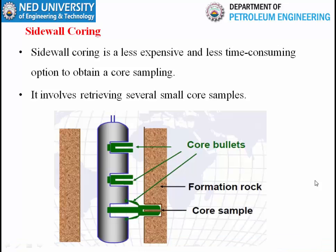Assalamualaikum, this is Fayzan Ali and this is my second recorded lecture for week number 10. In this week we will discuss coring and NMR log. First we will discuss coring. There are two types of coring: one is called conventional coring and the other is called sidewall coring.